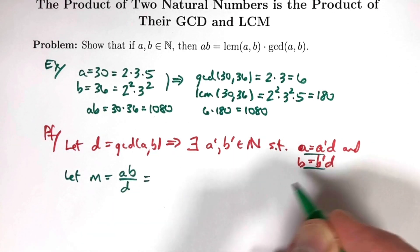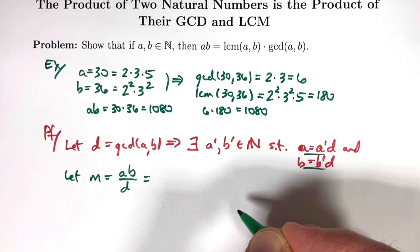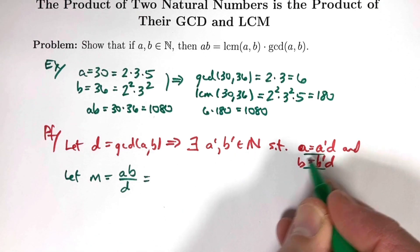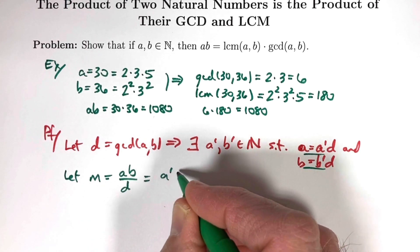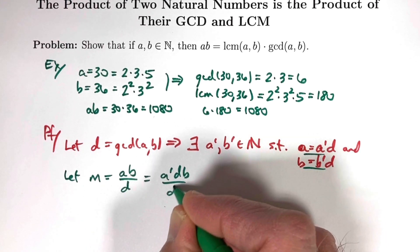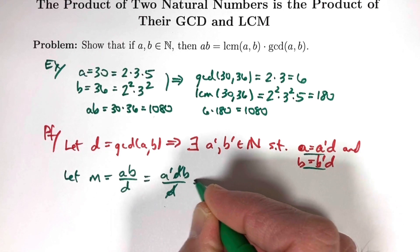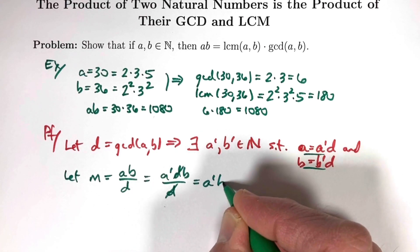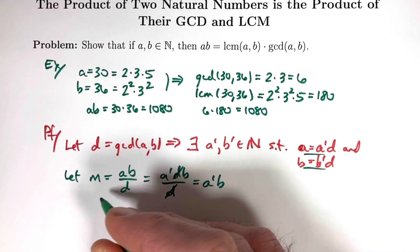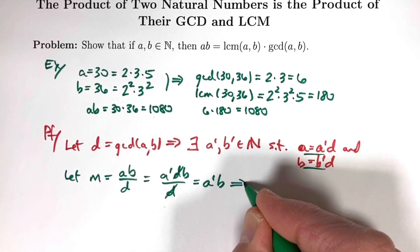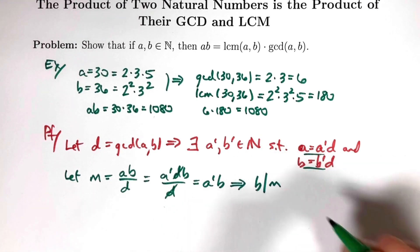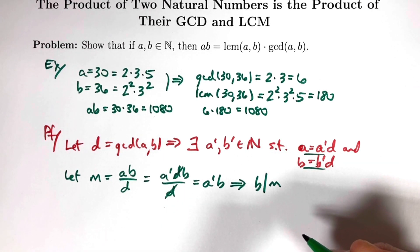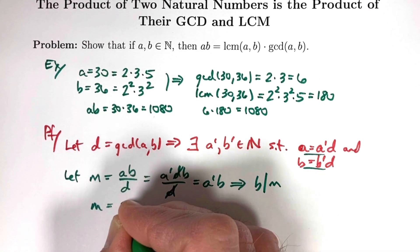Using these two equations, I can easily see that it's a common multiple of A and B. For example, I can replace A with A' times D, like this, and then I can cancel these Ds to write that M is A' times B. That means M is a multiple of B. B divides M, M is a multiple of B. I can do a similar calculation with the other equation.